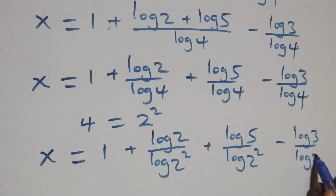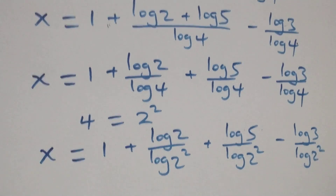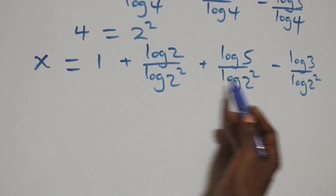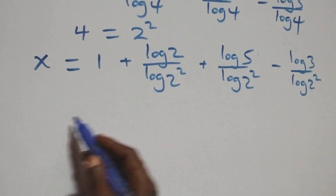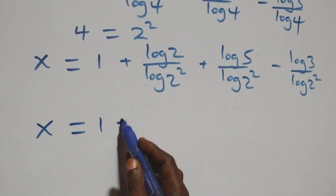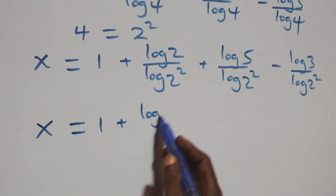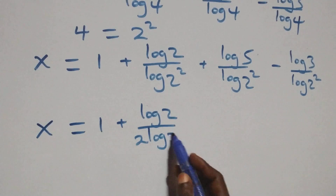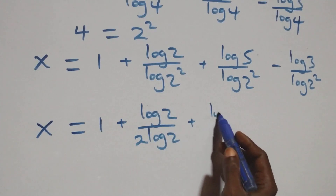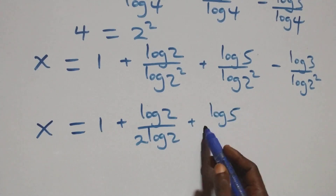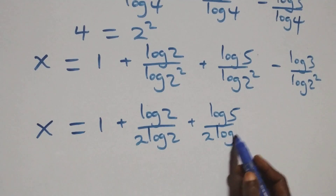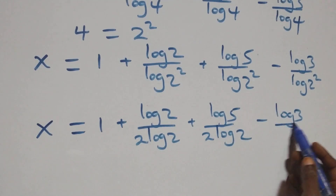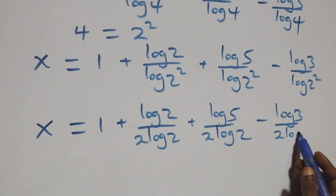We can write log 4 as log of 2 squared. Applying the power law of logarithm, the 2 comes out, giving x equals 1 plus log 2 over 2 log 2, plus log 5 over 2 log 2, minus log 3 over 2 log 2.